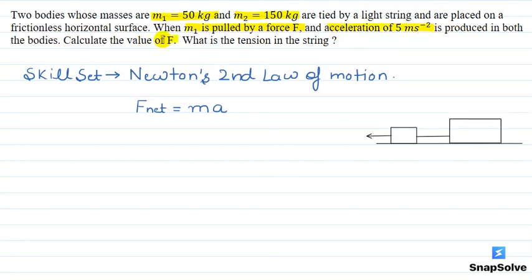Calculate the value of F and what is the tension in the string. The question in which we have given that we have two bodies M1 and M2 such that when we pull M1 from force F, the acceleration of this system is given to us as 5 meter per second square.